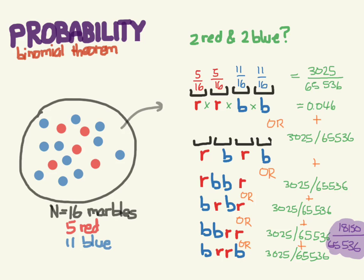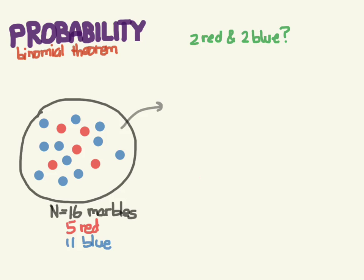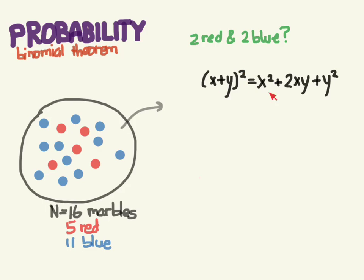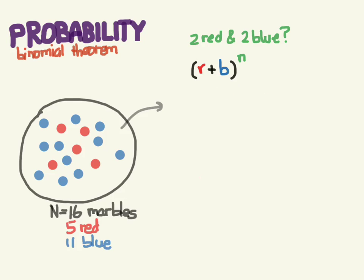That was pretty cumbersome and complicated, but there's an easier way — using binomials. You may remember from algebra that binomials like (x + y)² expand to x² + 2xy + y². I'm not going to make you do that multiplication — there's an easier way using the binomial theorem.